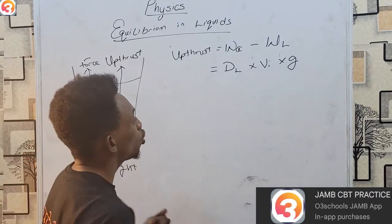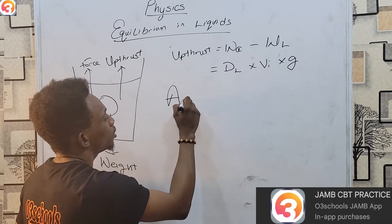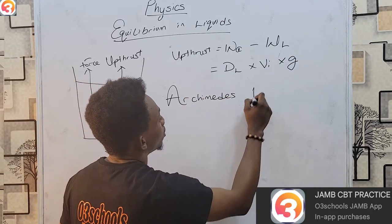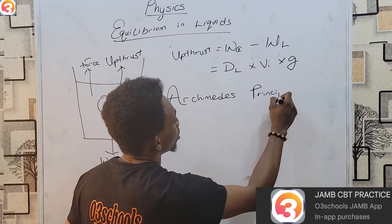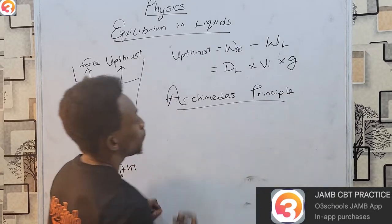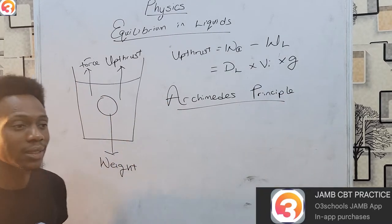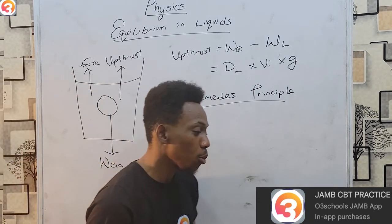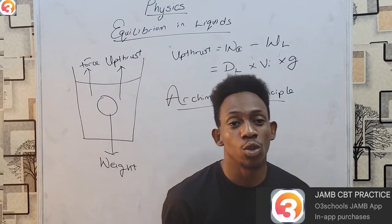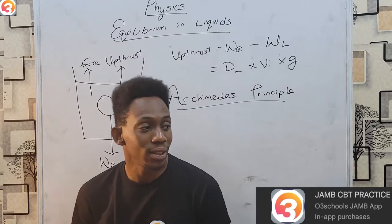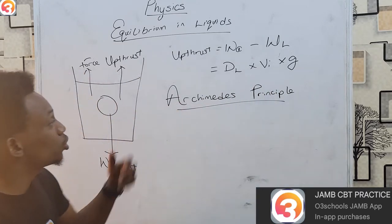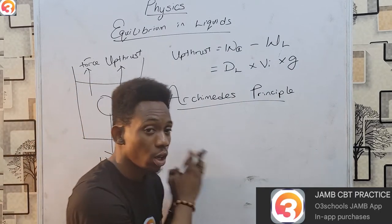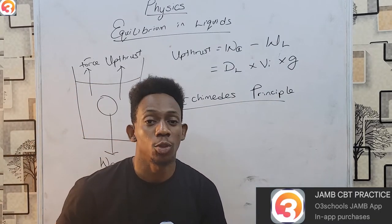There is a law which looks at upthrust from the Greek philosopher and mathematician Archimedes — we call this Archimedes' principle. It states that an object submerged in a liquid experiences an upthrust which is equal to the weight of the liquid displaced by the object.